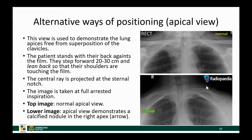Apical views are requested less frequently because they serve only one purpose: to demonstrate the lung apices and any lesions that might project over them. The patients are asked to stand with their back against the film, step one step forward, and lean back so their shoulders touch the film. The central ray is projected at the sternal notch, and the image is taken at full arrested inspiration.